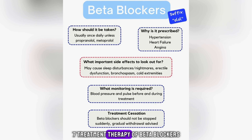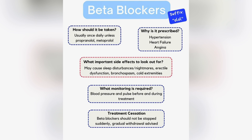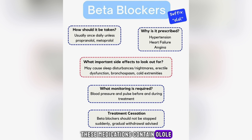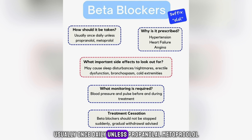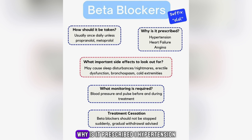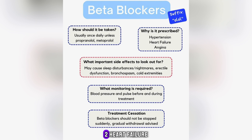Treatment therapy of beta-blockers. These medications contain 'olol' at the end of their generic names. How should it be taken? Usually once daily, unless propranolol or metoprolol. Why is it prescribed? 1. Hypertension. 2. Heart failure. 3. Angina.